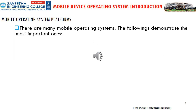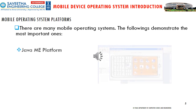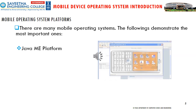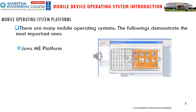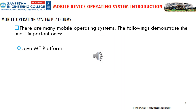There are many mobile operating systems. Among the most important ones is Java Platform, Micro Edition — or Java ME — a computing platform for development and deployment of portable code for embedded and mobile devices such as microcontrollers, sensors, gateways, mobile phones, personal digital assistants, TV set-top boxes, and printers.